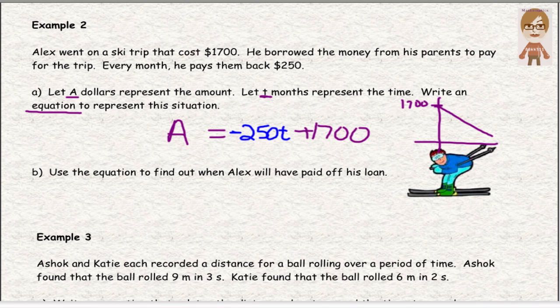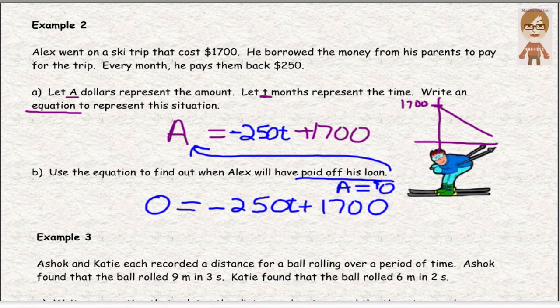We're paying down. The $1,700 goes down by $250 every month. The total amount goes down, because you're paying the loan off. Then it says, use the equation to find out when Alex will have paid off his loan. If he paid off his loan, that means the amount of the loan would be zero. It would be gone. So if the amount of the loan is zero dollars, we would actually sub that in for the amount of the loan. The amount of the loan now is zero. It's been paid off.